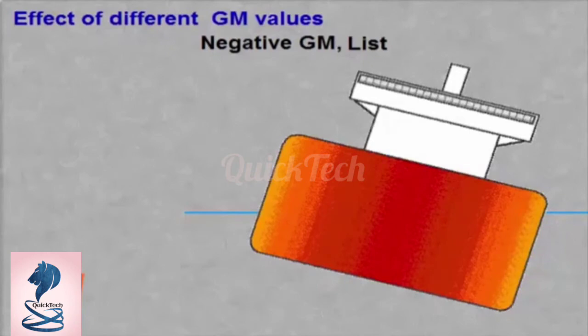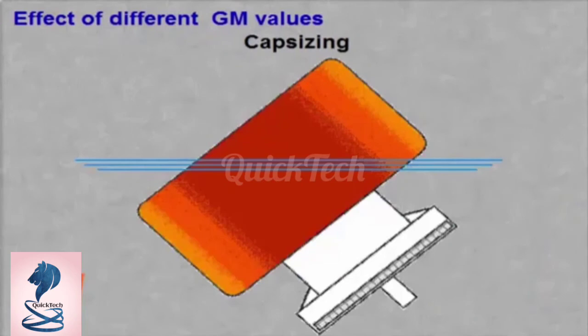A negative GM may also result in capsizing. G is higher than M and GM will not be positive before after the capsizing.